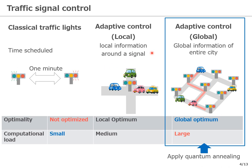The problem we are trying to address is this global version of adaptive control. Here, we consider not only a single traffic light, but a group of traffic lights in the entire city in order to make the traffic flow smooth. But again, the size of the optimization problem is very large, and it will be difficult to solve with a conventional computer. Our aim is to propose an optimization method using a quantum annealing machine and evaluate its performance.